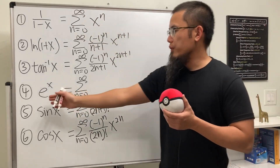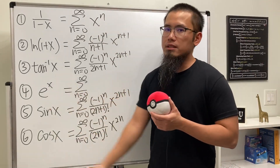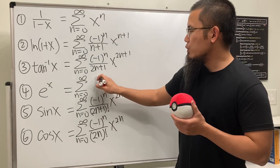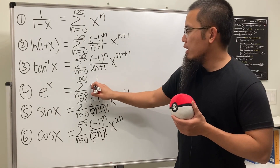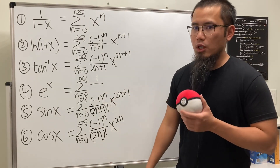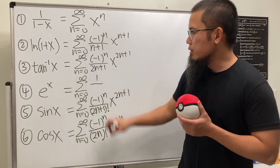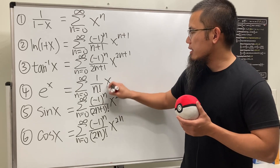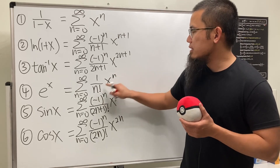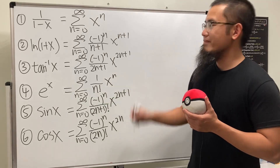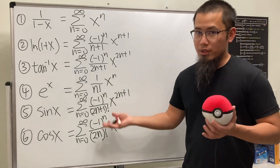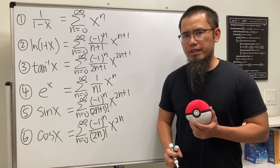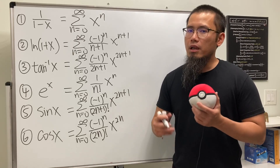To finish, e to the x is not alternating — we just have 1 on top — and we see all the factorials, so we get n! in the denominator and x to the nth power. Now we are done with all the series formulas. Let's talk about the technical part: the radius of convergence and interval of convergence.